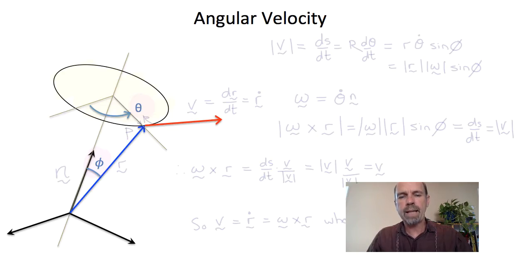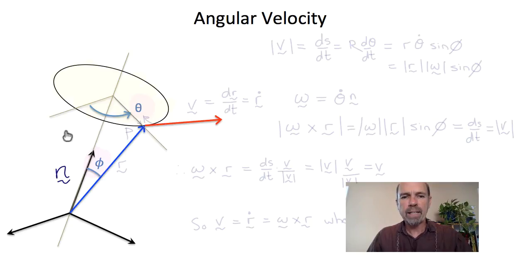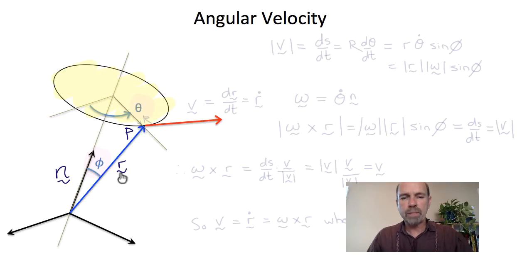Welcome back. Next we'll consider angular velocity and angular acceleration in some more detail. Let's consider the rotation of a rigid body about an axis defined by the unit normal vector n, which is normal to the plane of rotation of point P. Point P has position vector r, and r makes an angle phi to n.